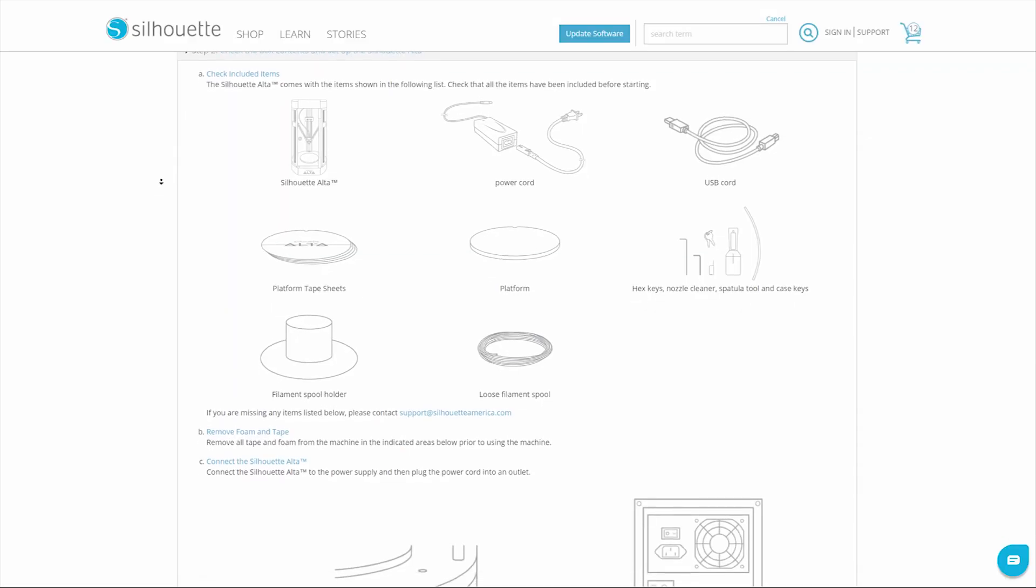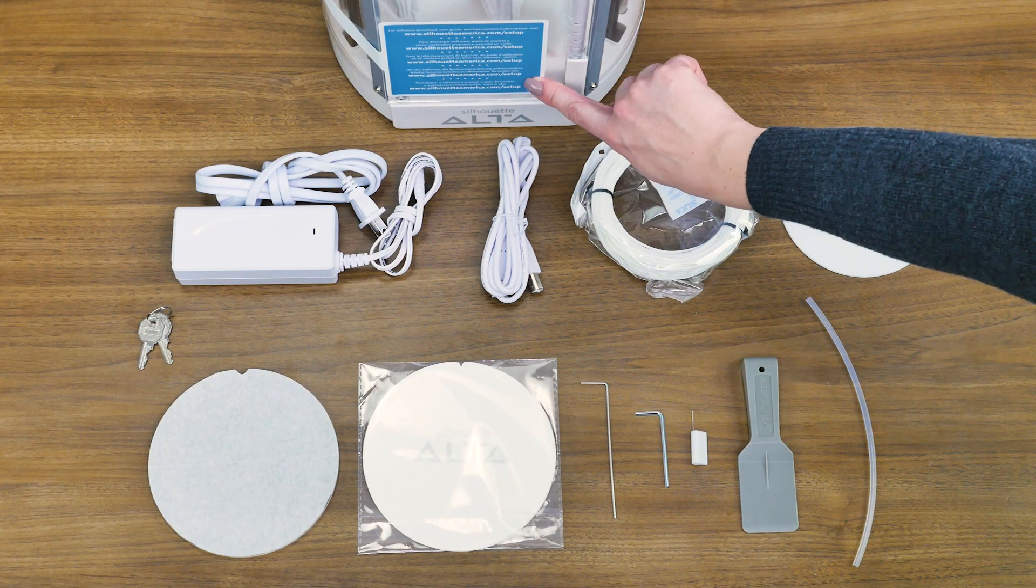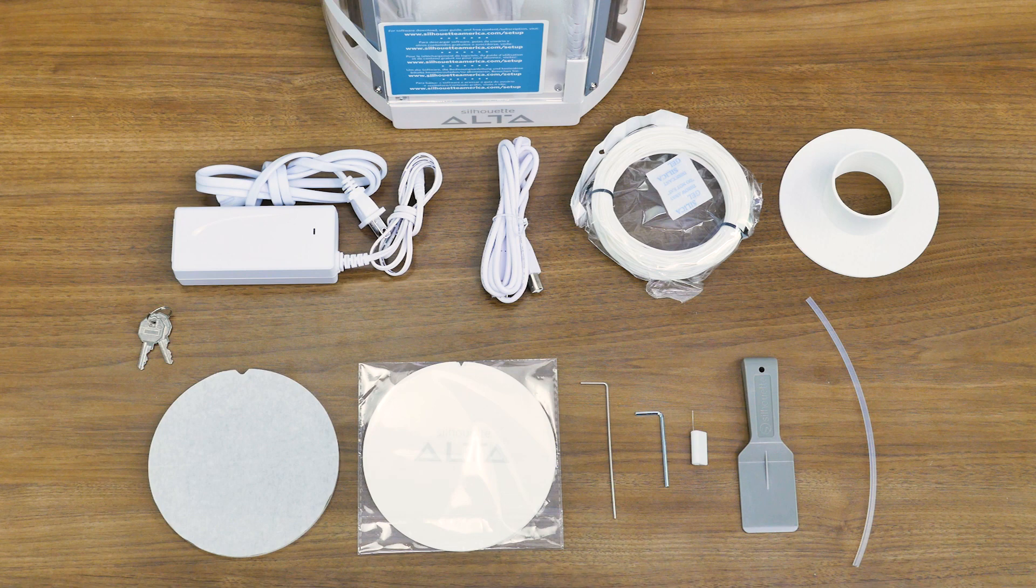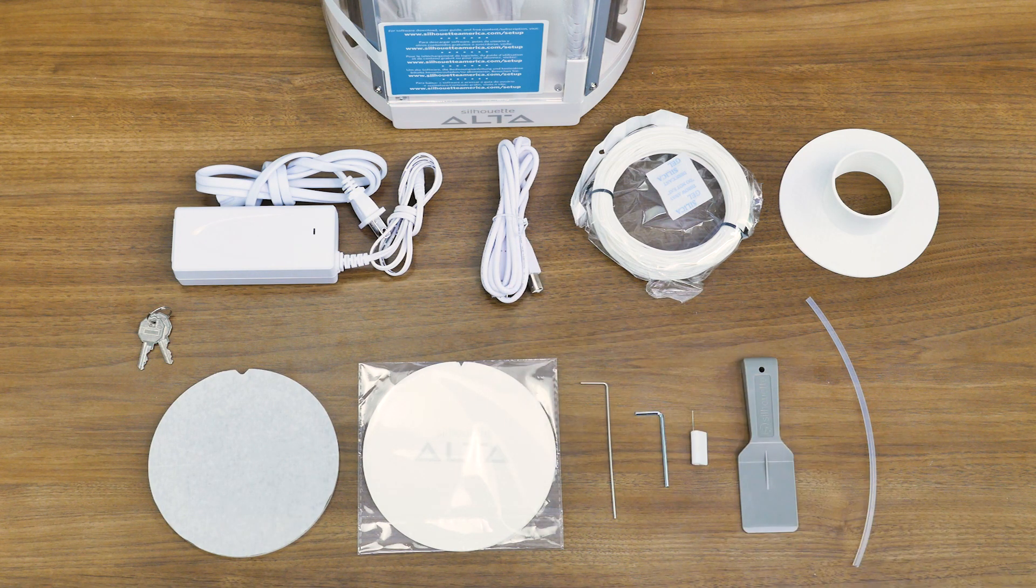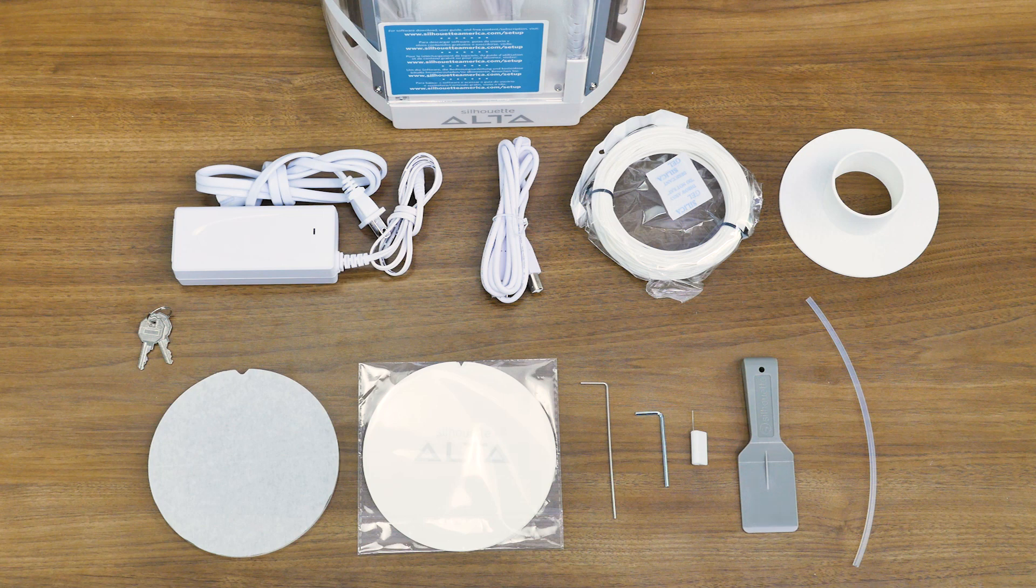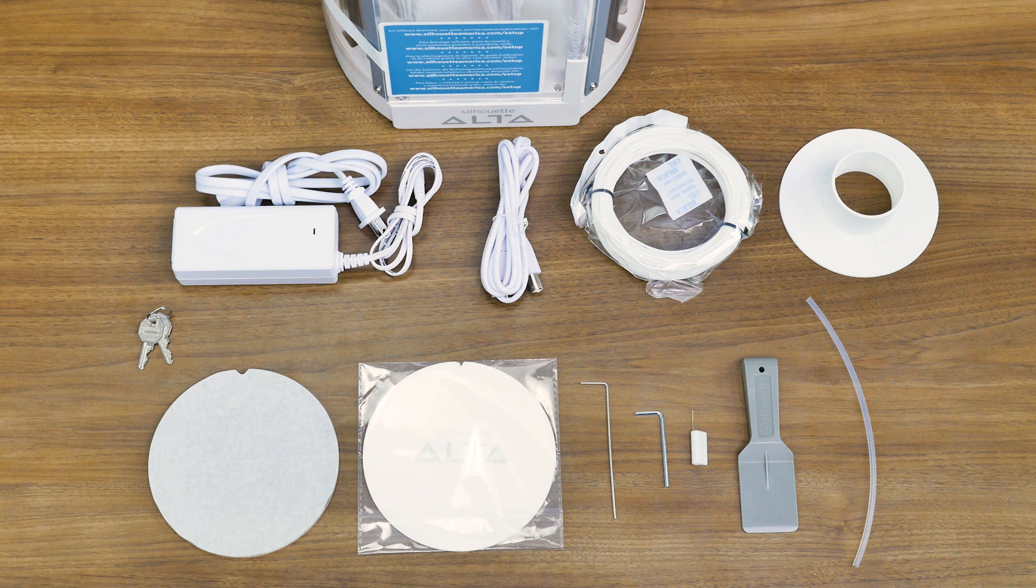Check the box contents and set up the Silhouette Alta. Once your machine has been registered, check to make sure that you have all of the items that should be in the box. In addition to the machine, there should be: a power cord with an AC adapter, a USB cable, loose white filament and a filament spool, a platform and platform tape sheets, two different sizes of hex keys, a filament tube, a nozzle cleaner, a spatula tool, and keys to lock and unlock the case surrounding the Alta.